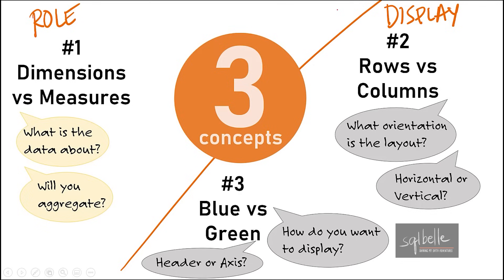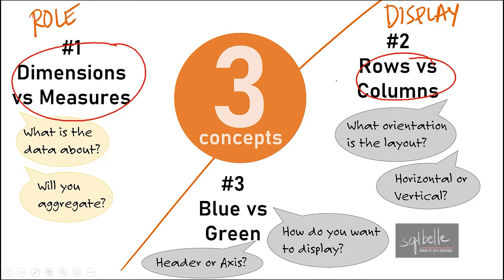To summarize, these are the three foundational concepts and cornerstones of working with Tableau. First, dimensions versus measures — understanding the role of the data and what it represents. Second, rows versus columns — the orientation of what we're drawing on screen, whether horizontal or vertical. Third, blue or green, discrete or continuous — displaying something as either a header or an axis. I hope this was helpful for those new to Tableau, and a worthwhile refresher for those who've been using it for a while. Thank you, and see you next time.